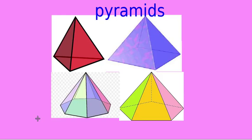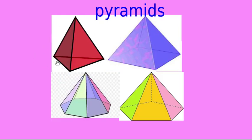For a triangular pyramid, the vertices are: one, two, three, four — four vertices. Basically three vertices at the base and the top, making four vertices total.